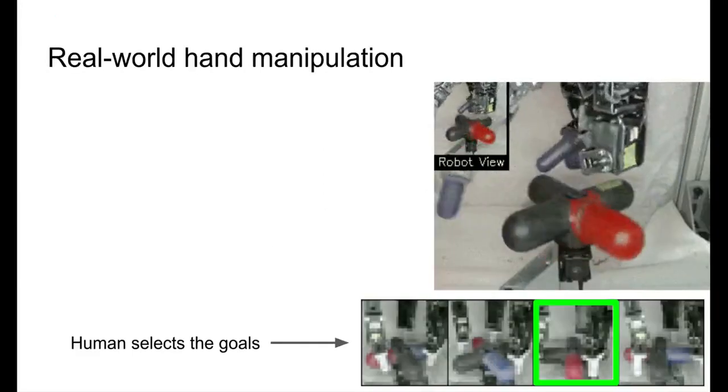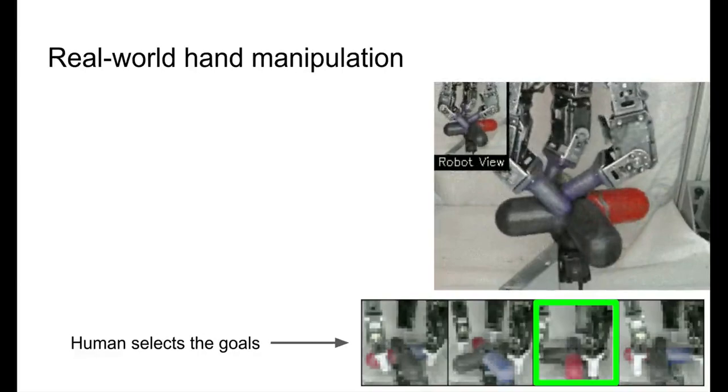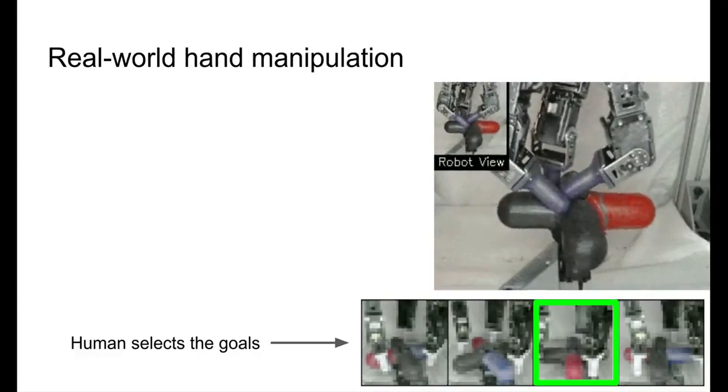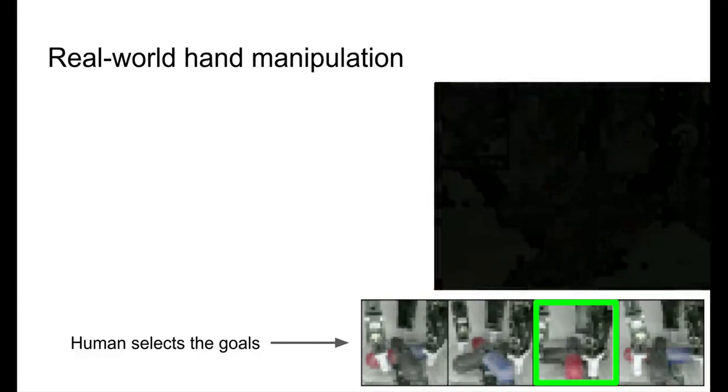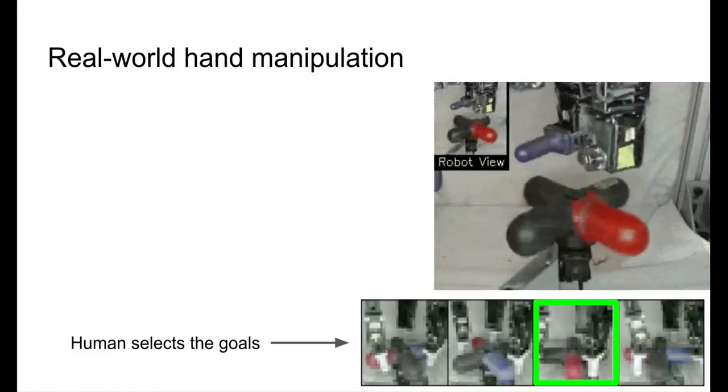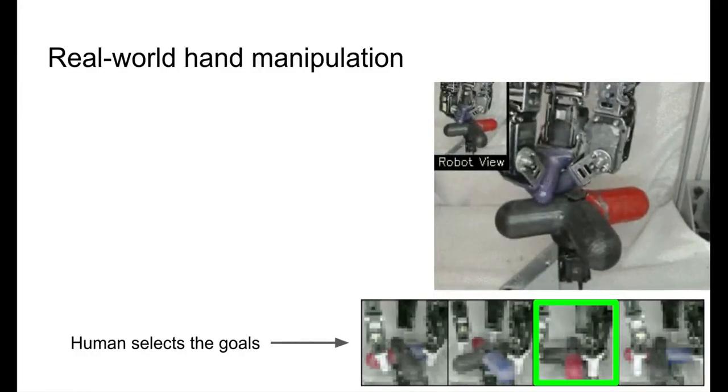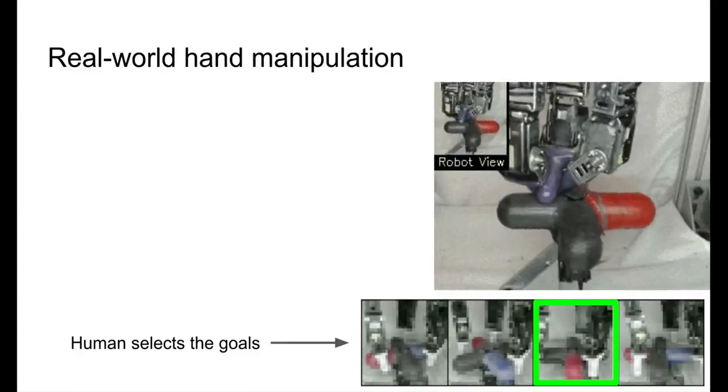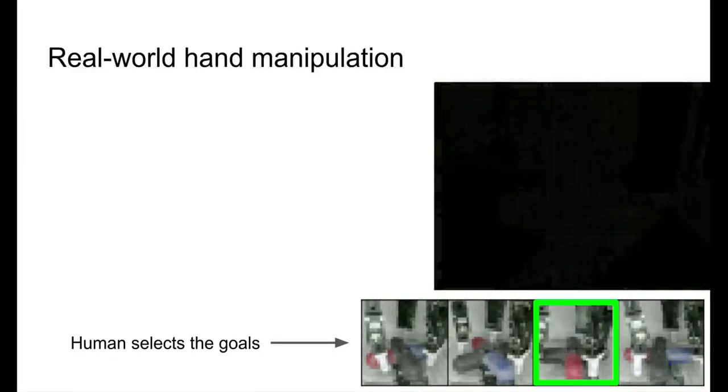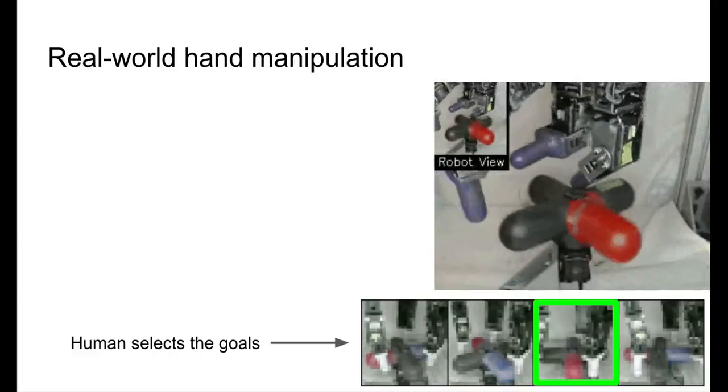Finally, let's look at some of the results. First, we apply DDL to a real-world manipulation task. The agent's task here is to rotate the valve to make the red arm point towards right. The four pictures at the bottom right corner illustrate the states that the human chose the goal from, about an hour into the training. The human picked the third one because in it, the red arm is closest to the desired orientation.